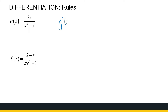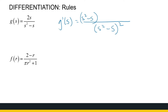The derivative of g(s): it's a quotient I can't simplify, so the denominator is (s squared minus s), whole thing squared. Write down (s squared minus s), then differentiate the numerator — the derivative of 2s is 2 — minus 2s times the derivative of the denominator, which is (2s minus 1). That's the derivative, and you can simplify the numerator further if needed.